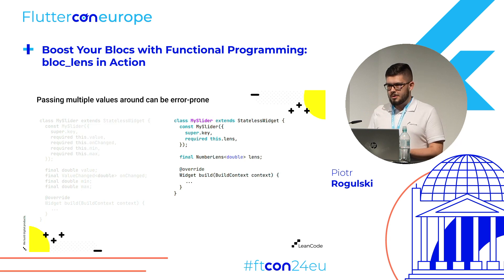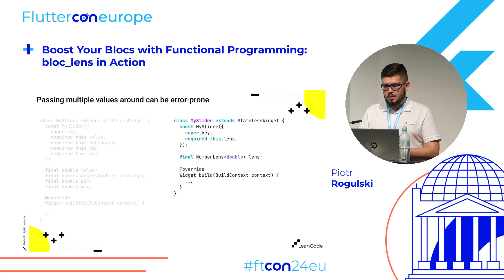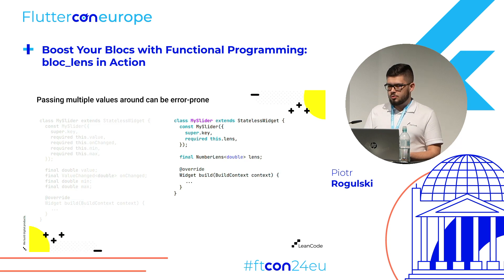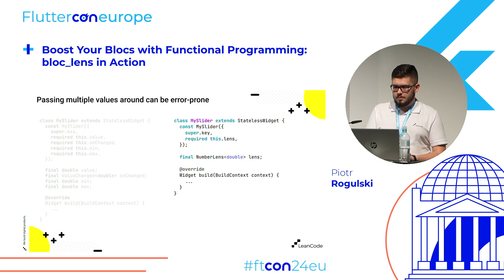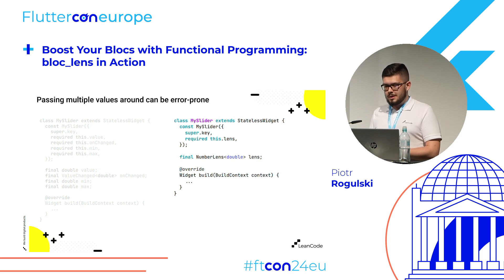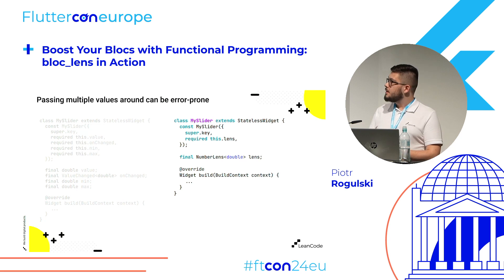I call it NumberLens — it manages some kind of value. We don't really have to know where it's coming from, but it's an object that allows you to get the current value, set the new value, and it can also have additional properties, for example the bounds — minimum and maximum value — as well as the step if you want to change the granularity of those changes.